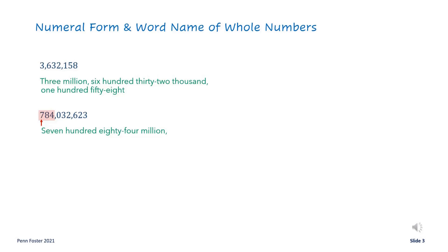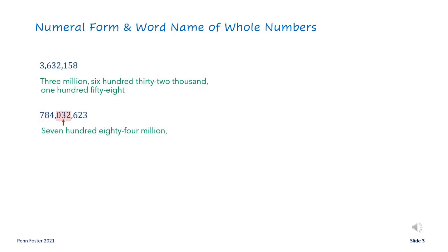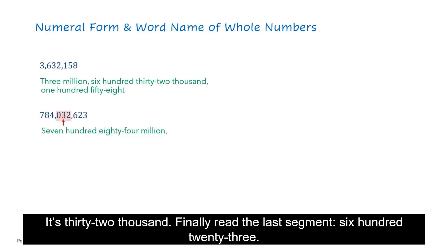Add a comma. Since the hundred-thousandths place has a zero, start reading from three: it's thirty-two thousand. Finally, read the last segment: six hundred twenty-three.